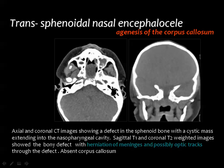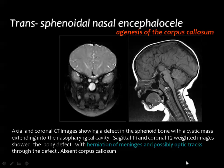This CT scan shows a cystic lesion in the nasoethmoidal area, and the coronal image shows a defect in the skull base. CT cannot definitively characterize the lesion contents, but you can see the lesion herniating through the skull base into the nasal cavity. On T1-weighted MRI, it contains dark fluid; on T2, the fluid is bright. There is no brain tissue inside this nasal meningocele, but the optic tracts may be herniated within its wall.